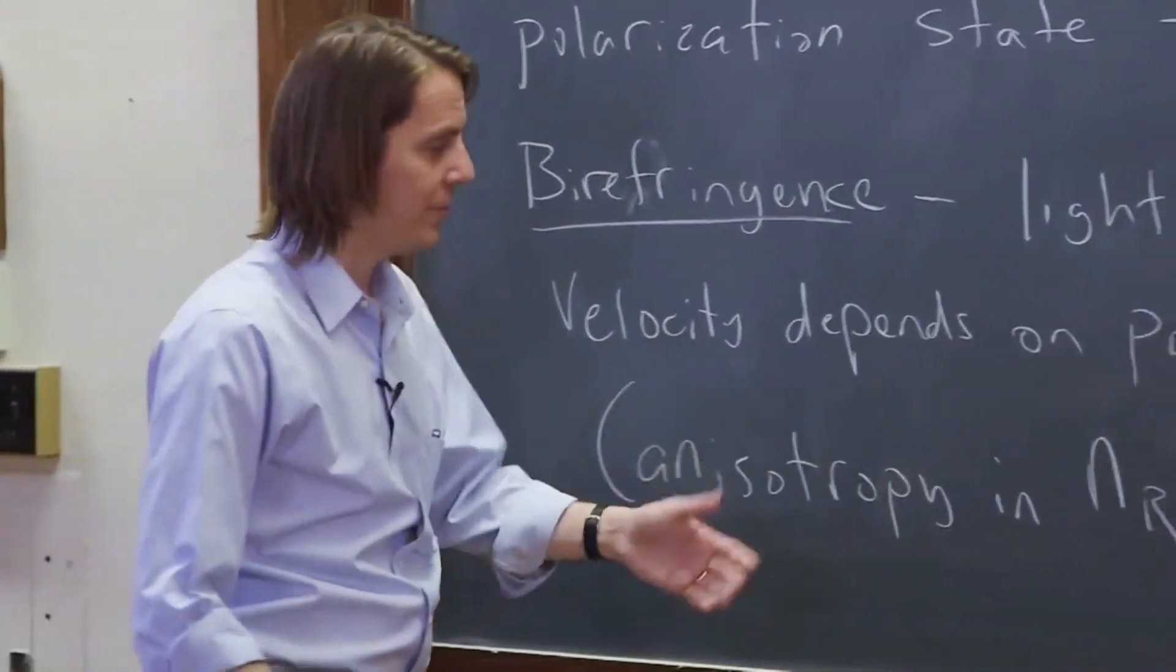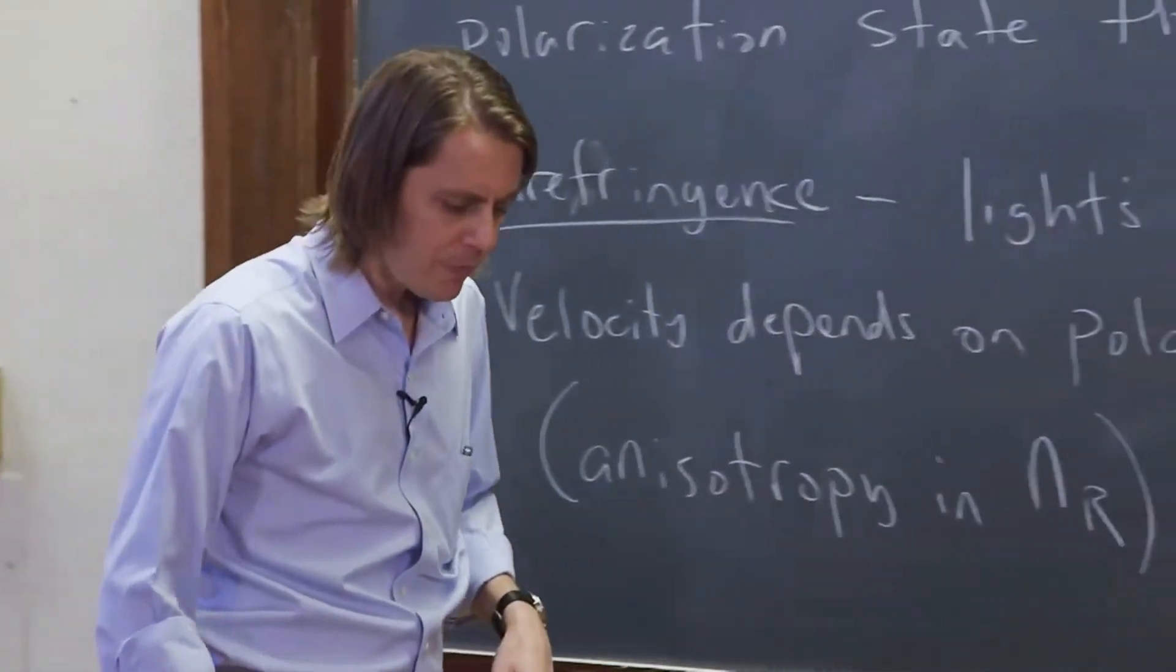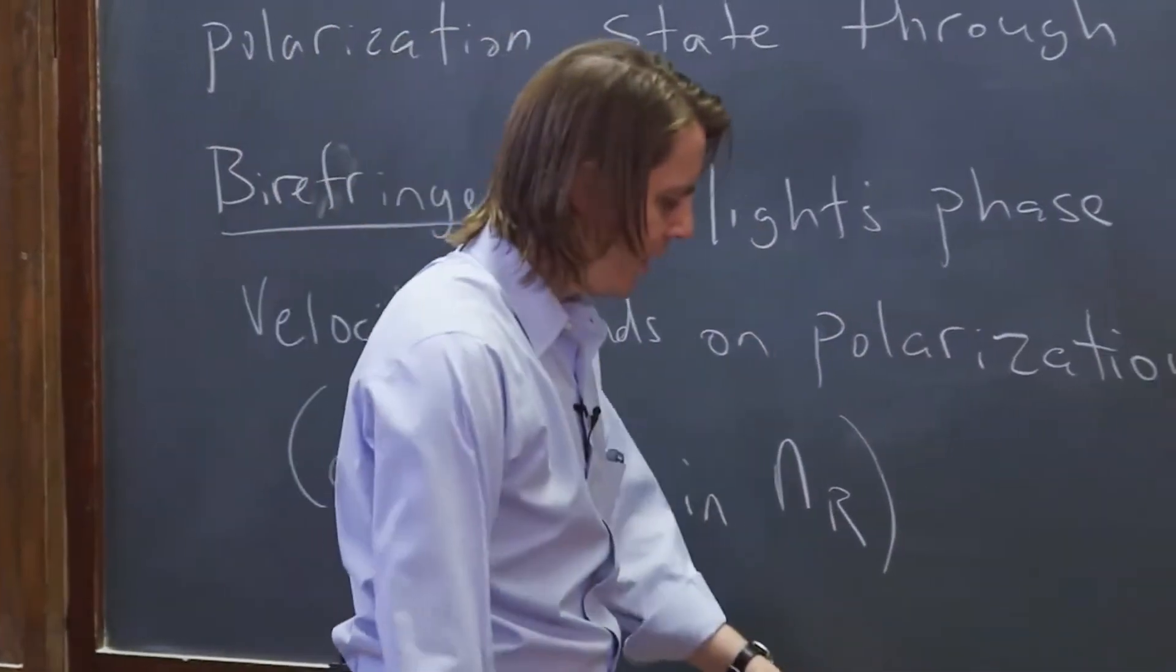So dichroism was anisotropy in the imaginary part, the absorption. This is anisotropy in the real part. So let's look at what that would do to light.